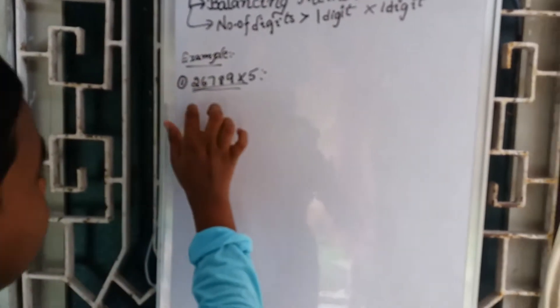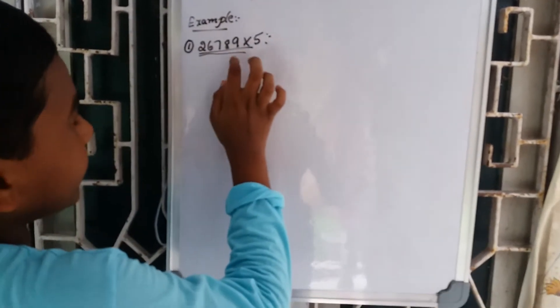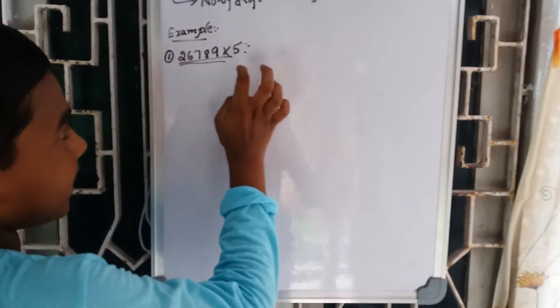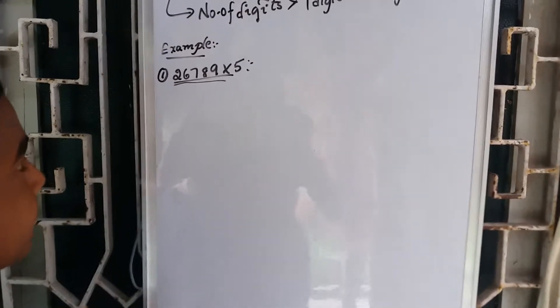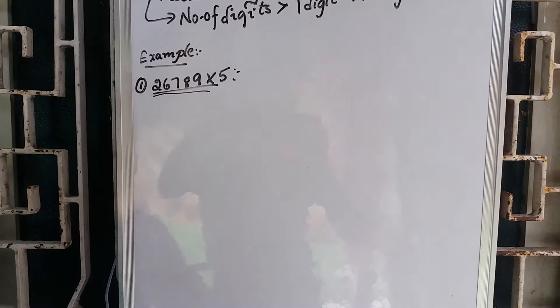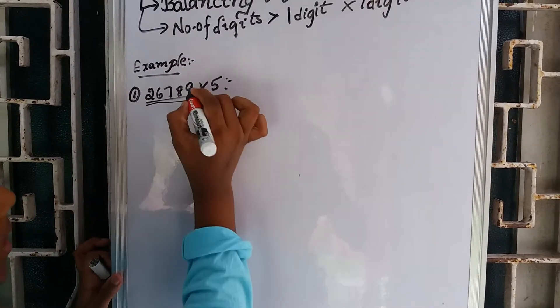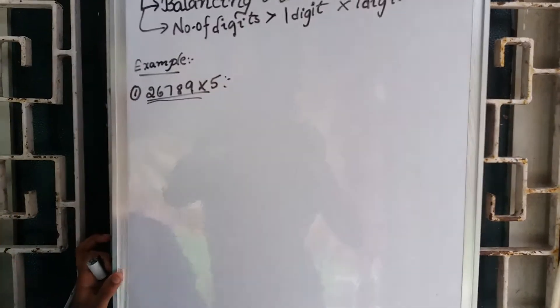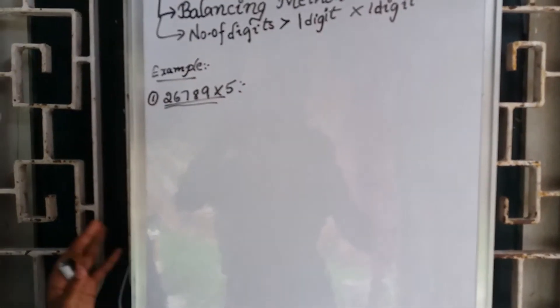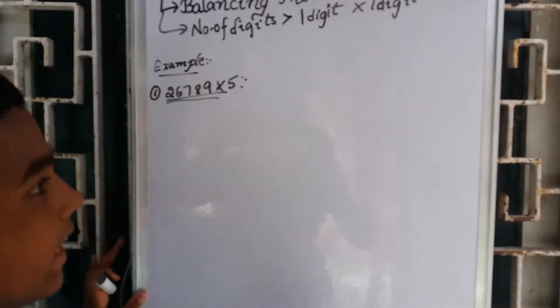I'm going to talk about two, six, seven, eight, nine times five. Now, I'm going to talk about the nine times tables.